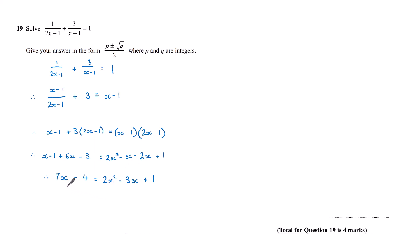Now if I subtract 7x and add 4 to both sides, on the left-hand side I'll have 0, and on the right-hand side I'll have 2x squared minus 10x plus 5. I now have a quadratic which I can solve for x.